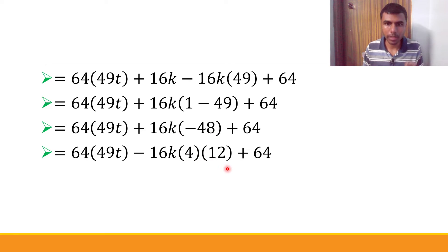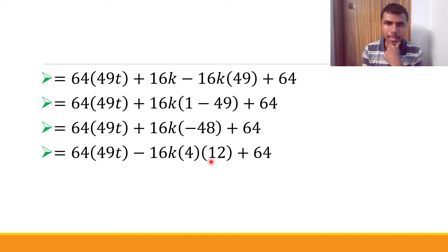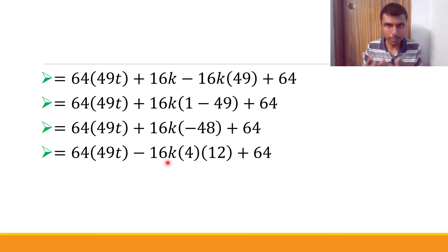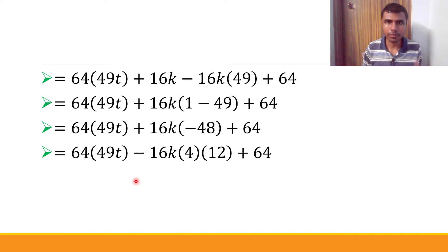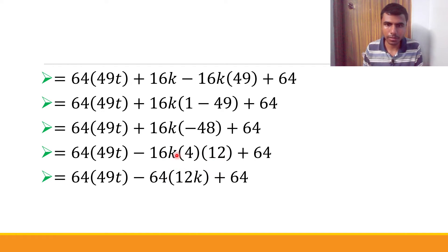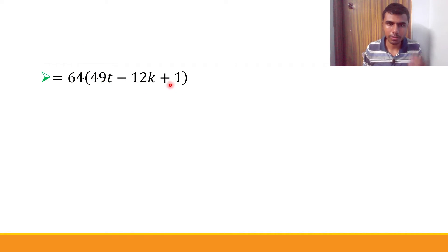Now 48 can be written as 4×12. The reason I choose 4×12 specifically is that I have 16 outside, and 16×4 = 64. So this becomes -64×k×12, which is 64 times something. Now every term has 64 as a factor: 64×49t, 64×1, and -64×12k. Taking 64 common gives 64×(49t - 12k + 1).